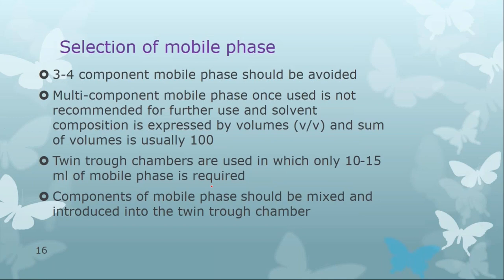Regarding mobile phase selection, three to four component mobile phases should be avoided. With a multi-component mobile phase, you must ensure that the ratio of the solvents is maintained throughout — if one is more volatile, the ratio will not be maintained. Therefore, not more than two components is recommended. A multi-component mobile phase, once used, is not recommended for reuse due to variations in solvent ratios. Solvent composition is expressed by volumes, with the sum of volumes usually being one hundred.